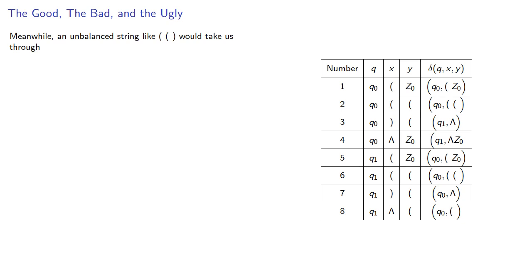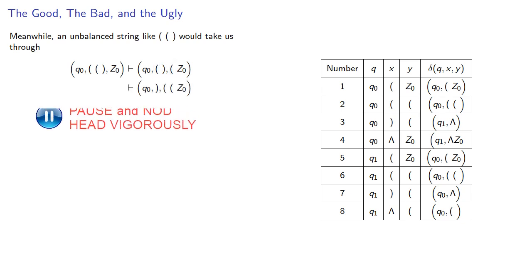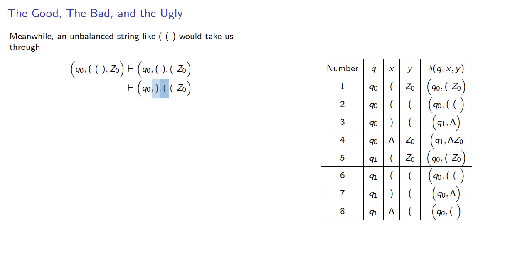Let's see what happens if we have an unbalanced string. We would go through initial state q0, our string, and our stack. We have initial state q0, string symbol open parenthesis, stack symbol z0, and so that puts us into open parenthesis z0. If we're in state q0, we read closed parenthesis, and our stack symbol is open parenthesis, then we'll drop that and switch to state q1.